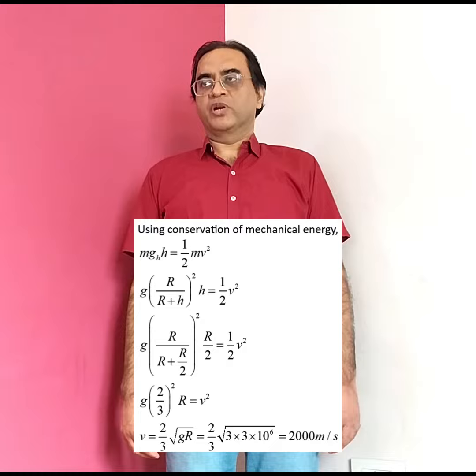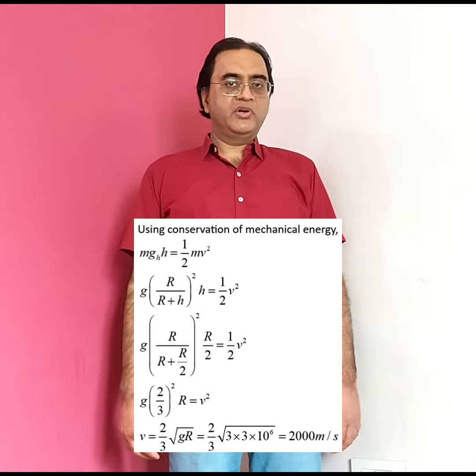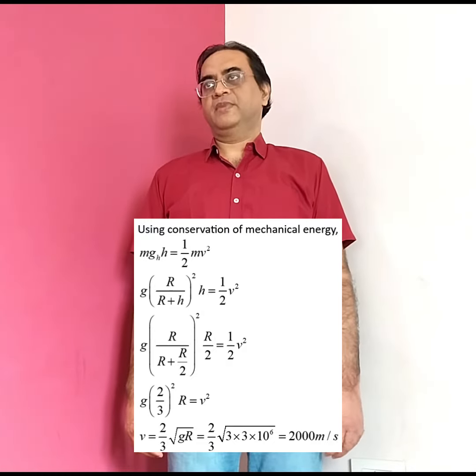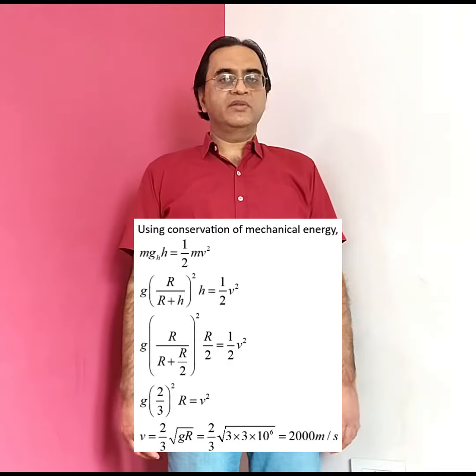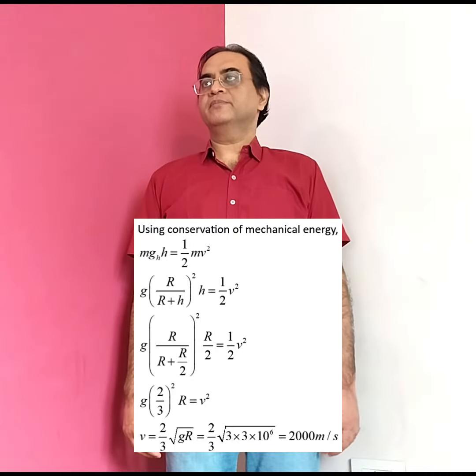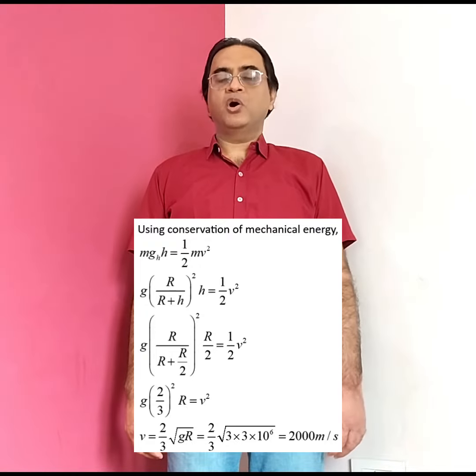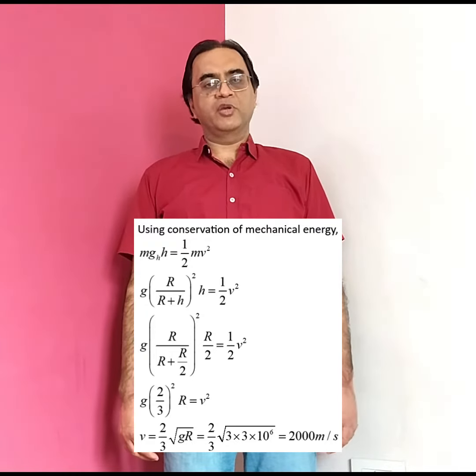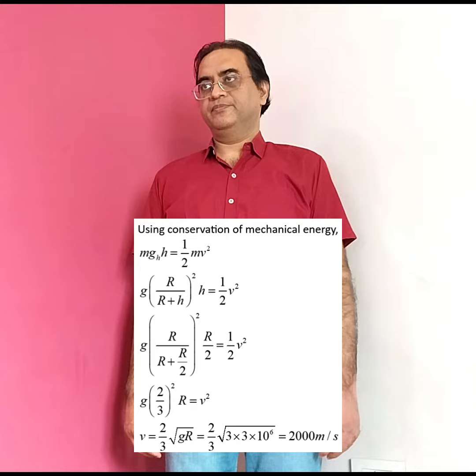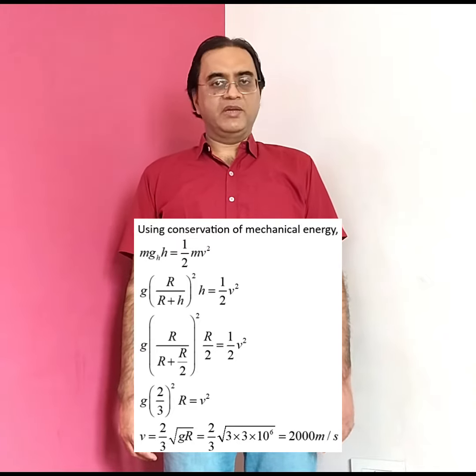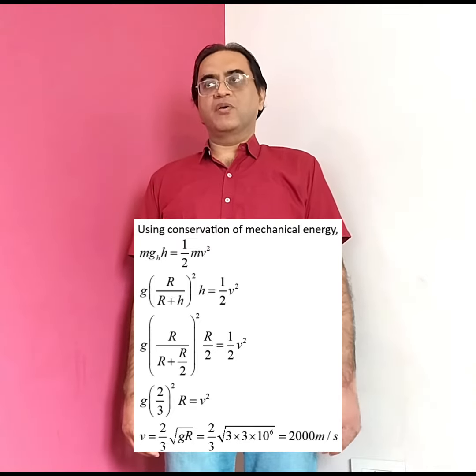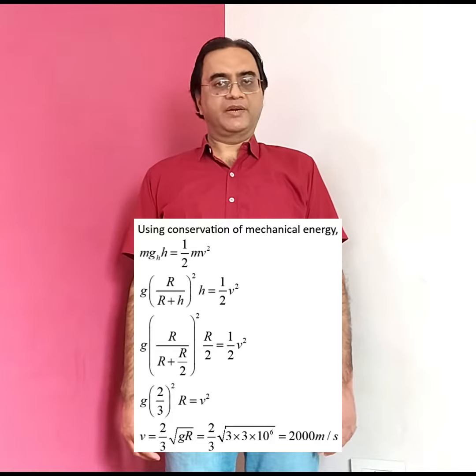Finally, putting the values of g and R, g being 3 meters per second squared and R is 3,000 kilometers or 3 times 10 to the power 6 meters, the value for v comes out to be 2,000 meters per second.